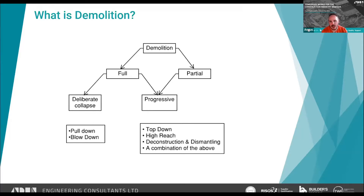Progressive and full demolition top-down is often used in city centres where you've got restricted access. As it sounds, you work from the top of the building down, typically using lifting plant — from as small as a one-ton machine up to typically a 15-tonner depending on the structure — demolishing within the building's own footprint.